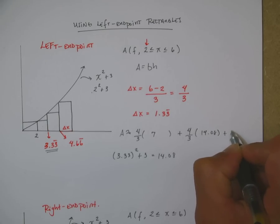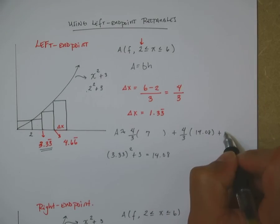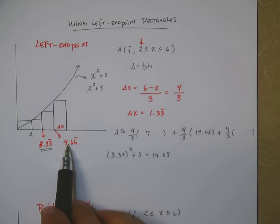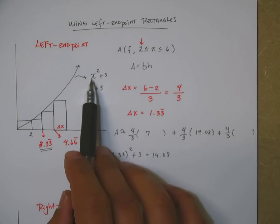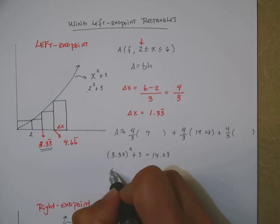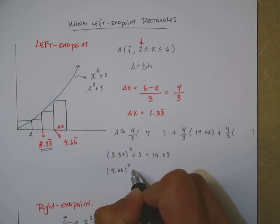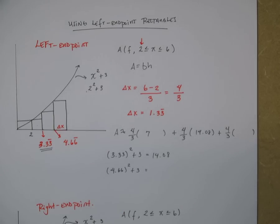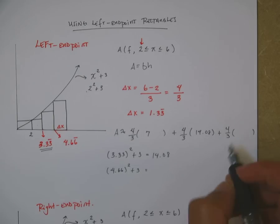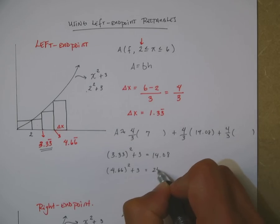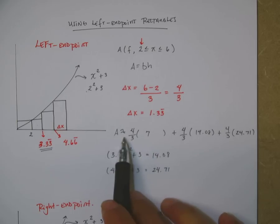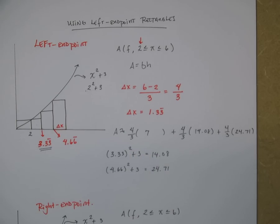And then my last one of course, same thing again 4 thirds times, now instead of 3.33 I take this 4.66 I plug it in here. So 4.66 square that plus 3. 4.66 we square that, add 3, it gives us 24.71. And then you would just do the math on your calculator, get your answer and then you are done.